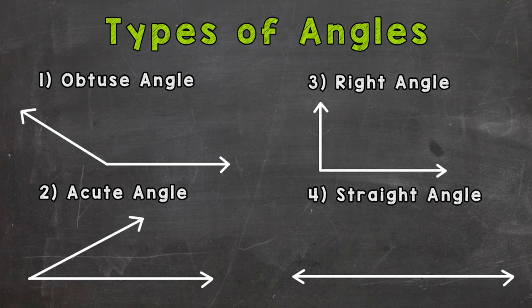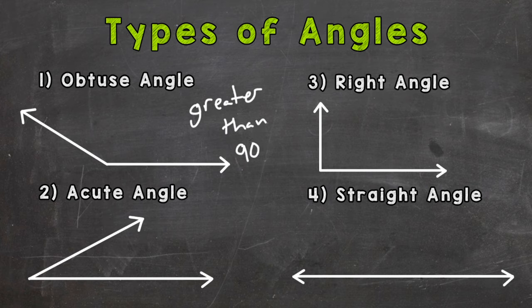An obtuse angle is any angle that's greater than 90 degrees, but it has to be less than 180. So an obtuse angle is greater than 90 degrees.